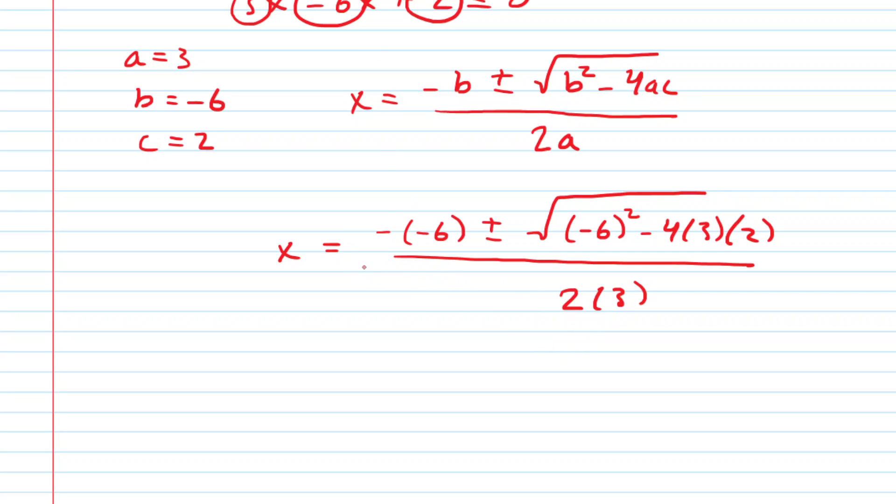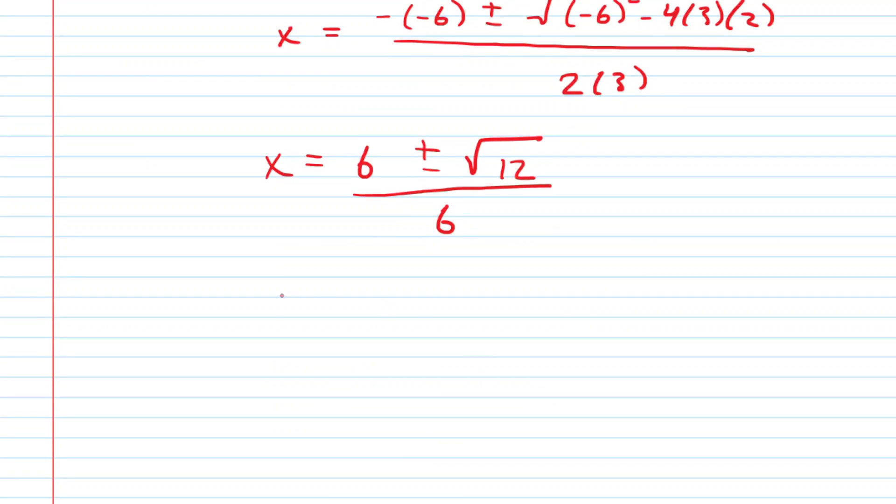Notice you have a negative negative 6 there, so you're going to get x is equal to positive 6 plus or minus the square root. Simplifying underneath the radical gives you 12 and then this is all divided by 6. But we can do better. We can simplify this a little bit further.